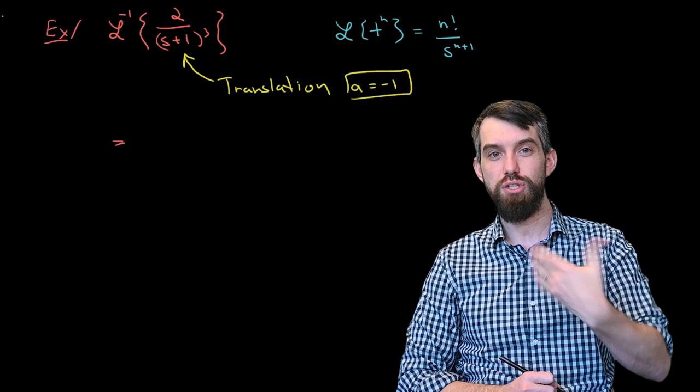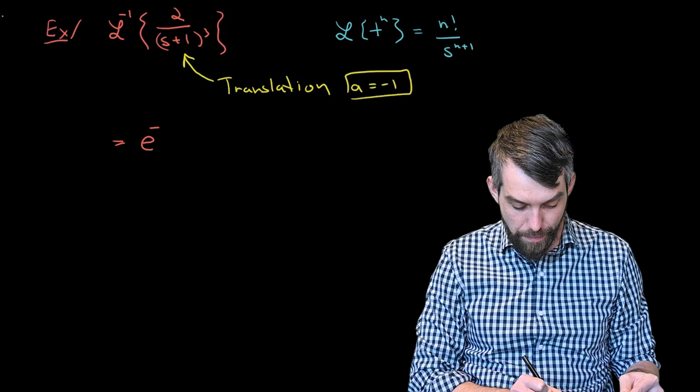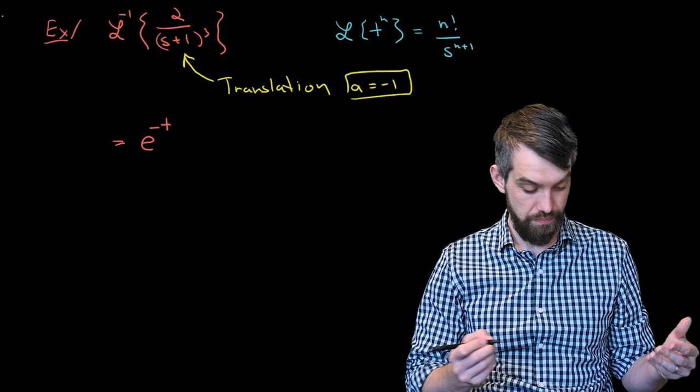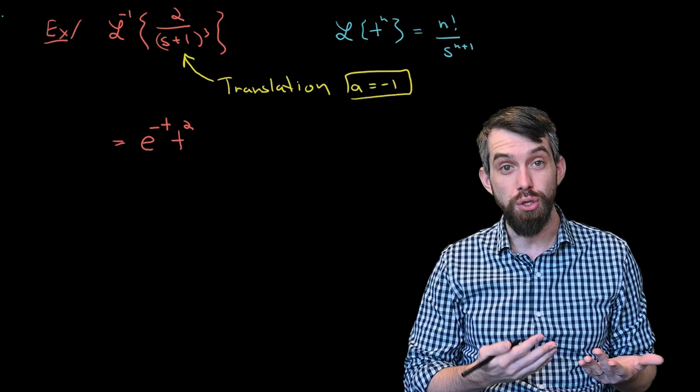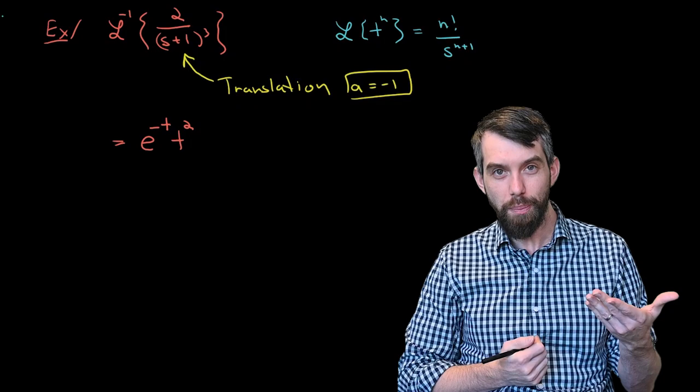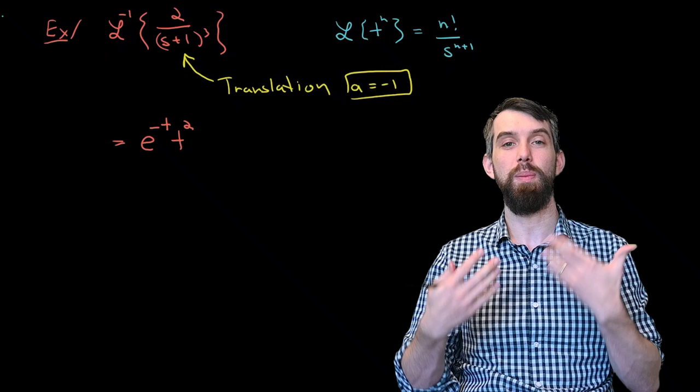So this is going to be e^(-t) — that's coming from the e^(at) term from the translation — multiplied by t². The reason it's t² is that n equals 2 gives division by s³, which is what I have. And since the 2 factorial matches the numerator, everything checks out. This is how I was able to compute the inverse Laplace transform by recognizing the shift.